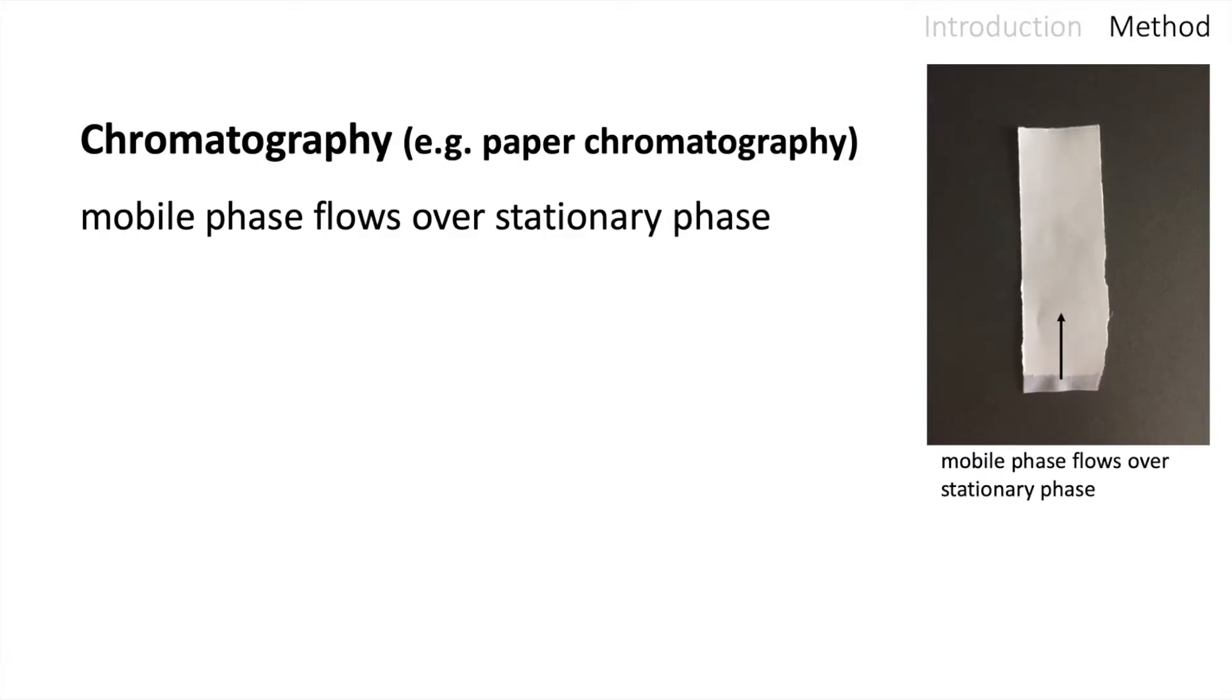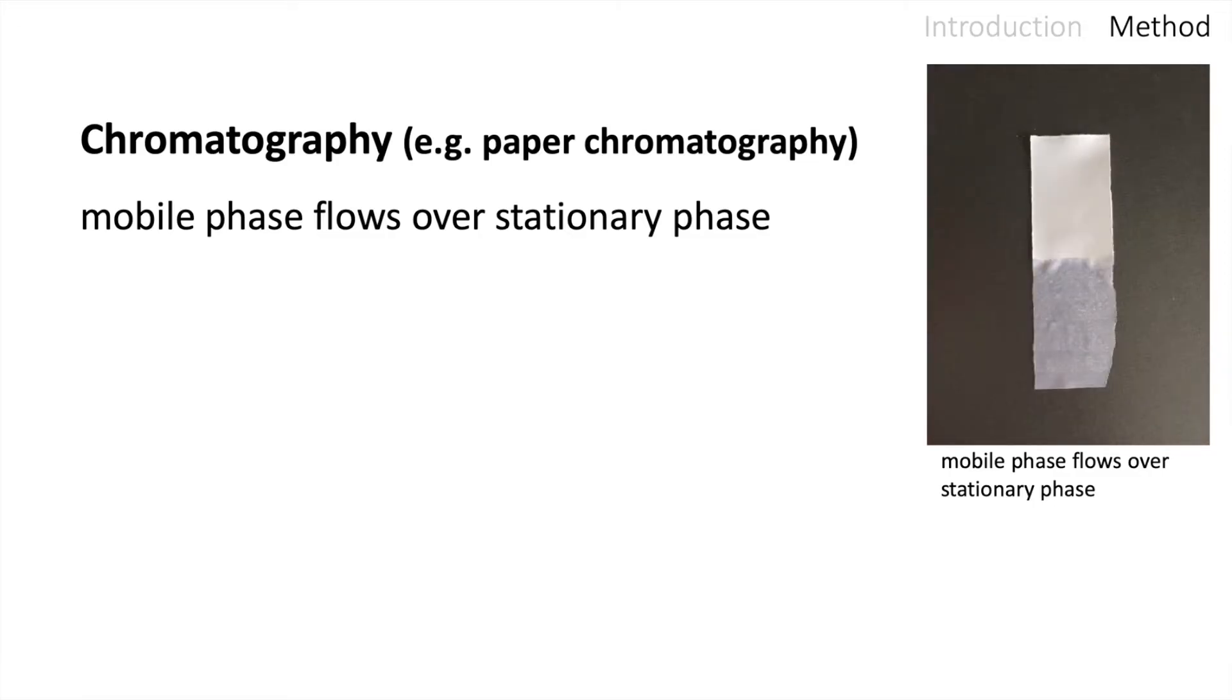In chromatography, in general in paper chromatography, the mobile phase flows now over the stationary phase as you can see here. And with the mobile phase also each compound of the mixture has different attraction levels to the mobile phase and to the stationary phase. And this leads to a different separation.